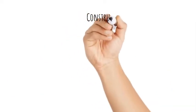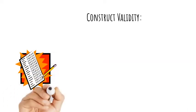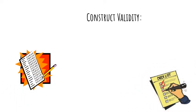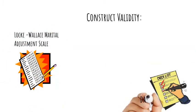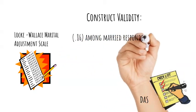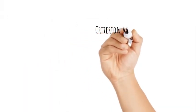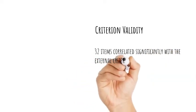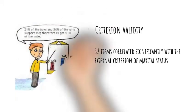The Locke-Wallace Marital Adjustment Test, a frequently used scale for measuring marital adjustment, was selected to assess how the Dyadic Adjustment Scale correlated with other similar scales. The correlation between the scales was 0.86 among married respondents and 0.88 among divorced respondents. Each of the 32 items in the scale correlated significantly with the external criterion of marital status — for each item, the divorced sample differed significantly from the married sample.